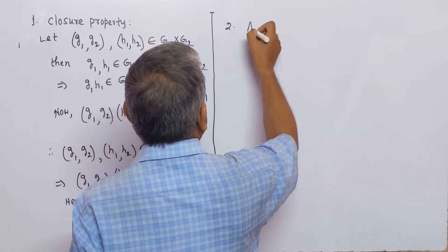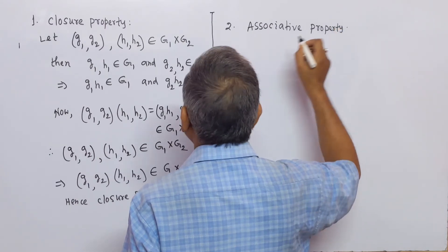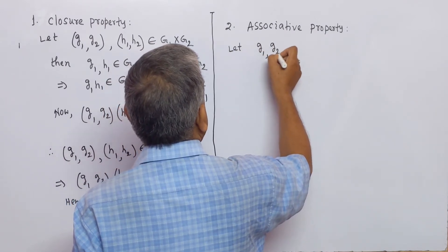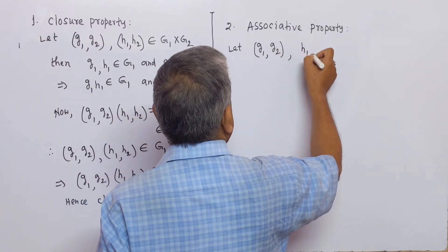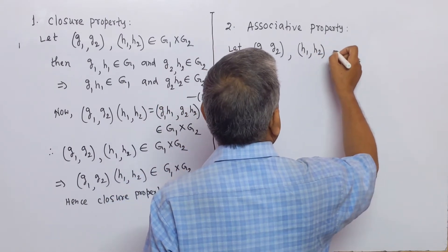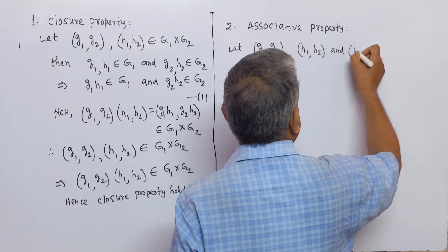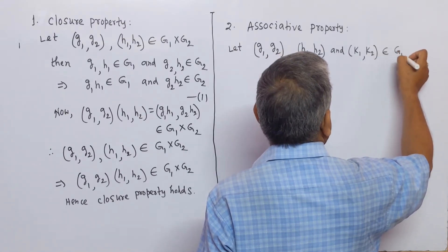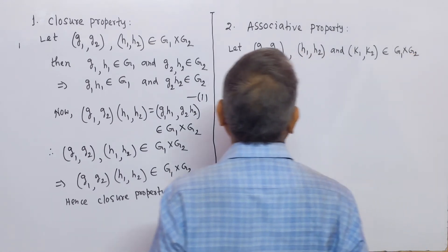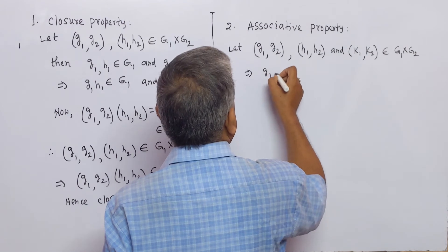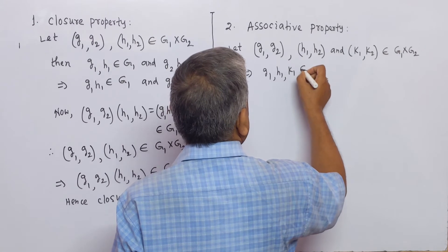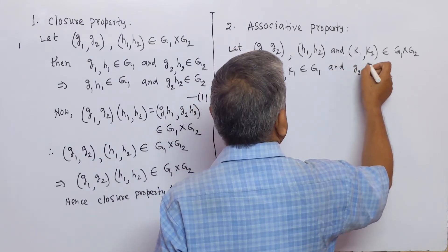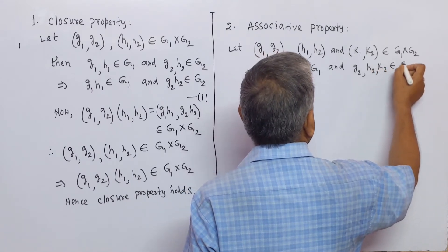Number two: Associative property. Let (g1, g2), (h1, h2), and (k1, k2) belong to the direct product G1 × G2. This implies that g1, h1, k1 belong to group G1 and g2, h2, k2 belong to group G2.